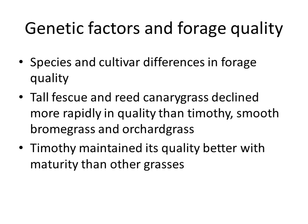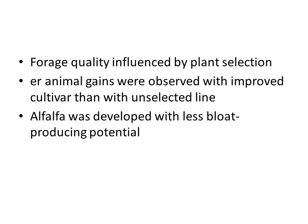Genetic factors also influence forage quality. Species and cultivar differences in forage quality are significant — tall fescue and canary grass declined more rapidly in quality than timothy, smooth brome, and orchard grass. Timothy maintained its quality better with maturity than other grasses. Forage quality is influenced by plant selection; animal gains were observed to be higher with improved cultivars than with unselected lines. Alfalfa was developed with less bloat-producing potential than other forage species.